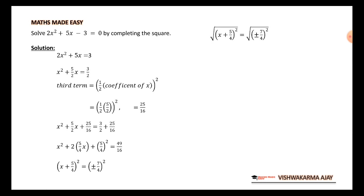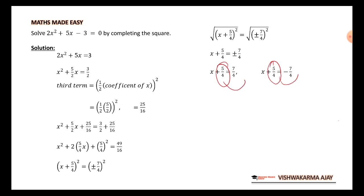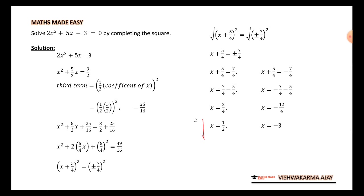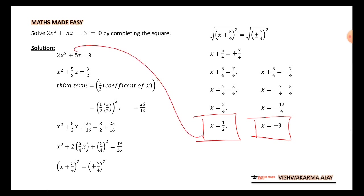Taking square roots on both sides, the square root and square cancel, leaving x + 5/4 = ±7/4. This gives two values: x + 5/4 = 7/4, and x + 5/4 = −7/4. Taking 5/4 to the other side gives x = 1/2 and x = −3. Substitute the values into the main equation to verify — I have already done so and confirmed these are correct.